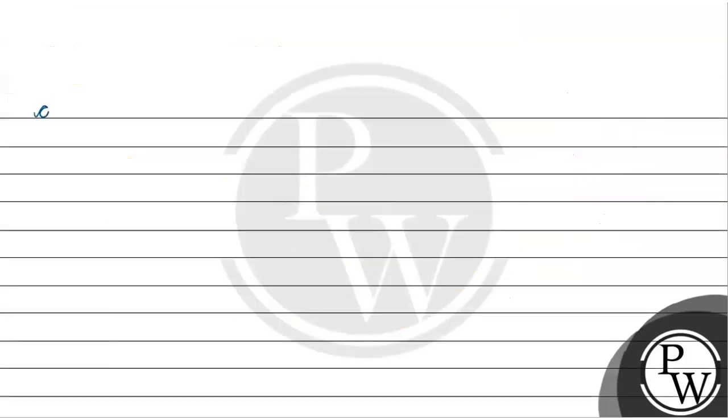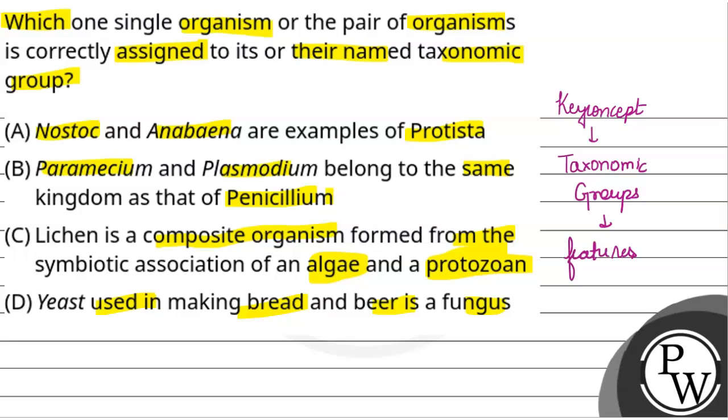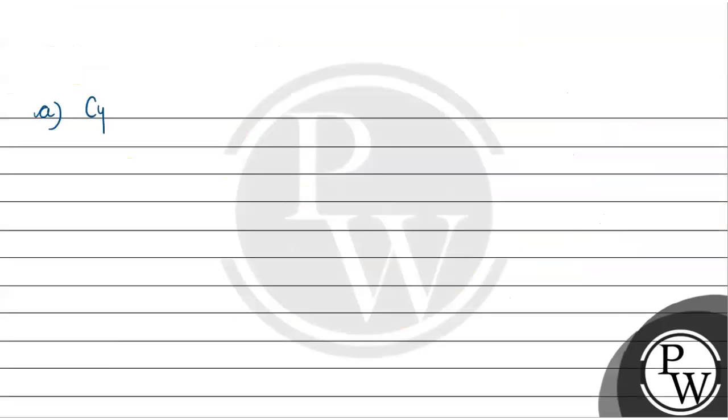If we talk about our first option, Nostoc and Anabaena - what are these? These are cyanobacteria. Anabaena and Nostoc both are cyanobacteria, not Protista. So Option A is incorrect.